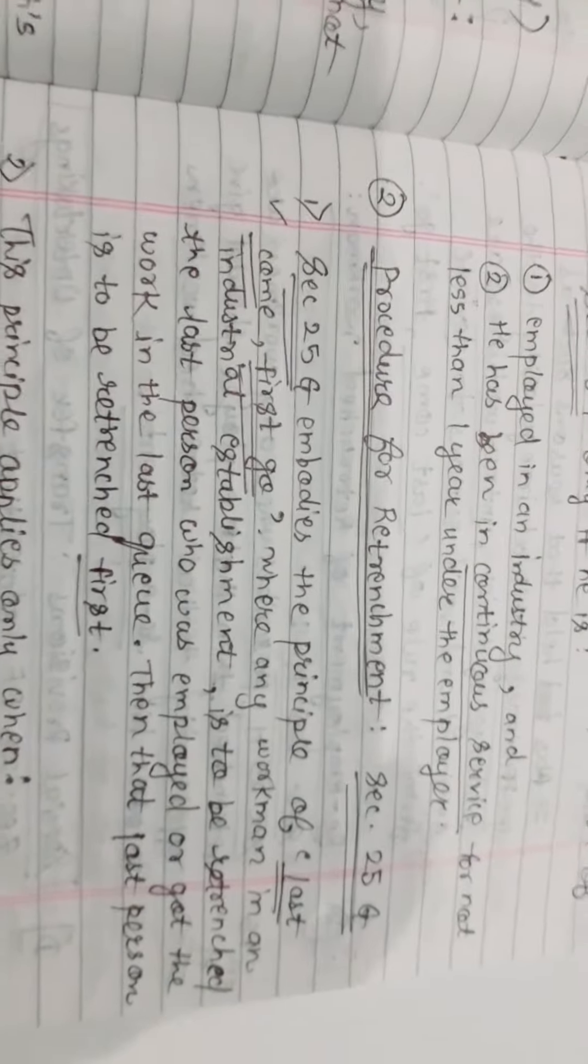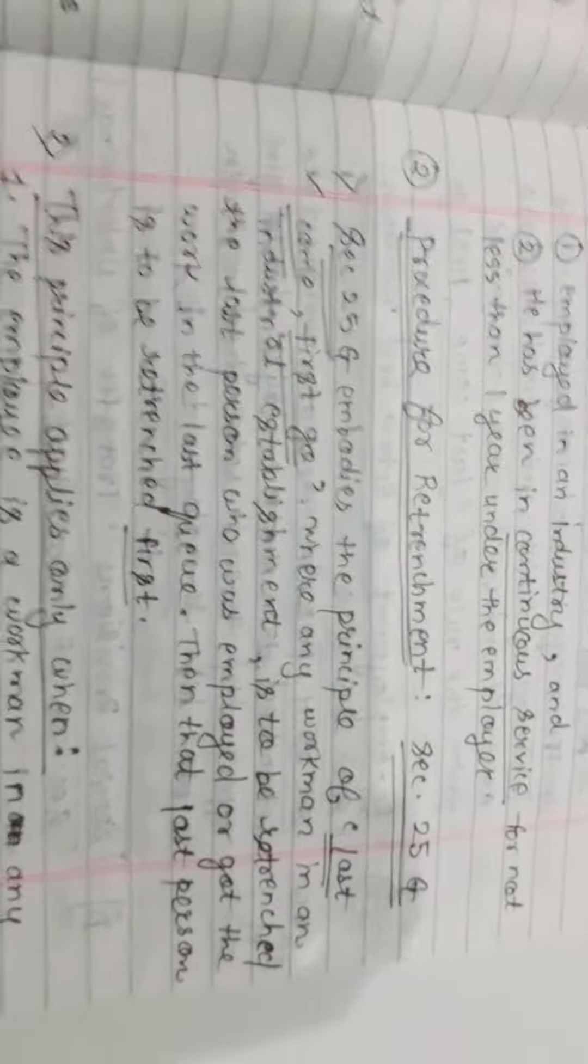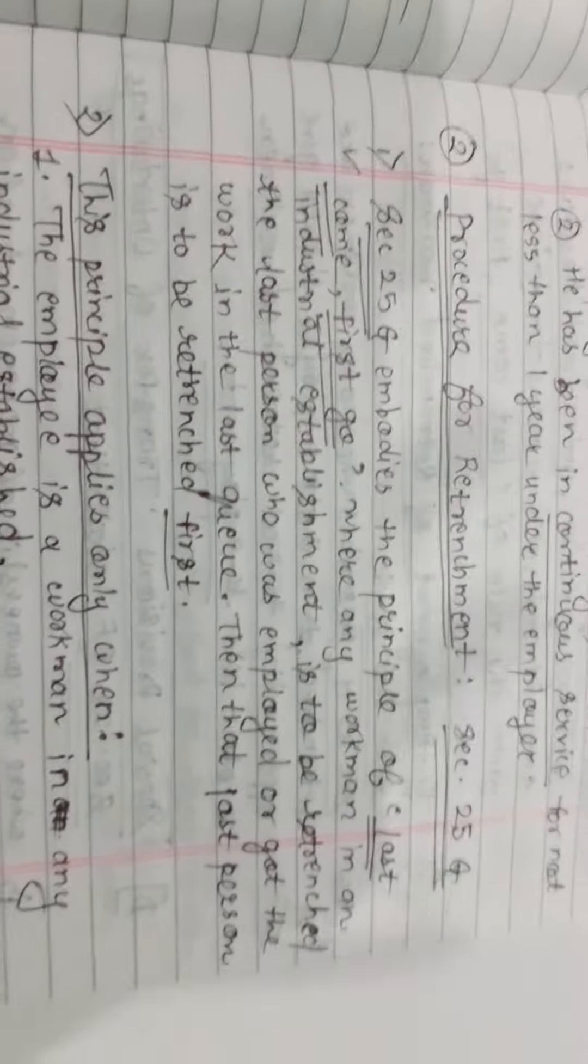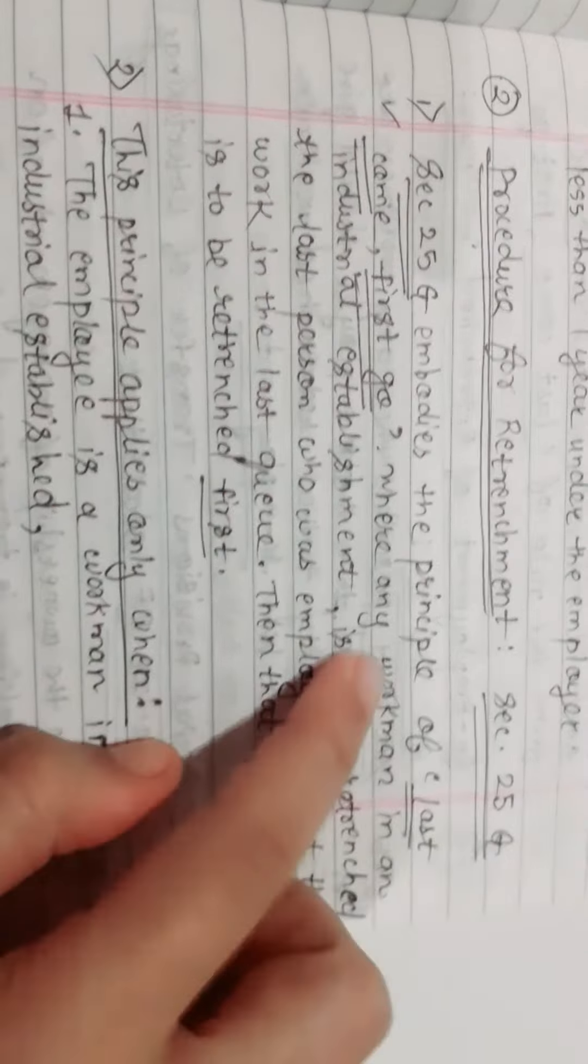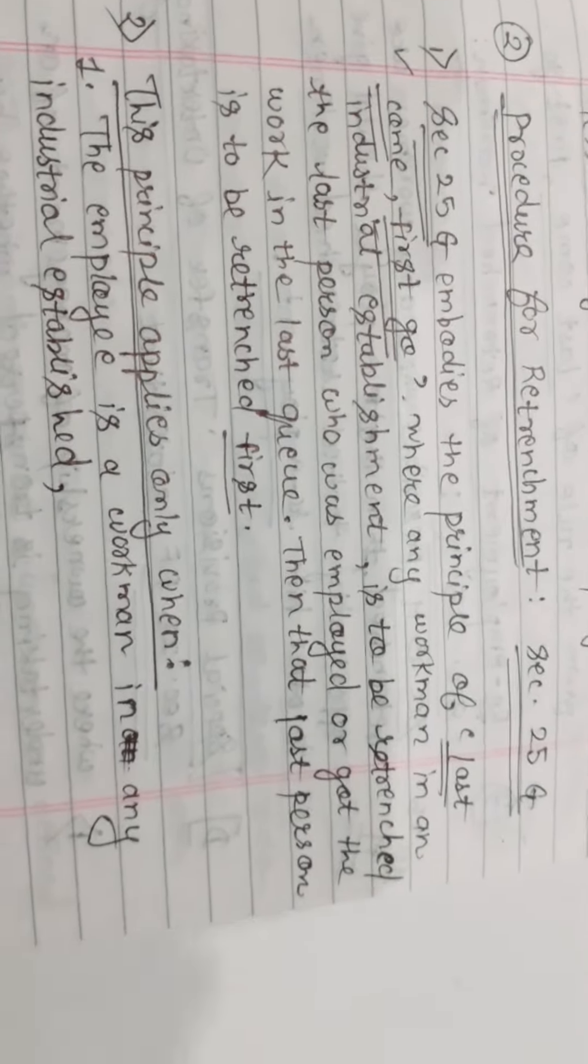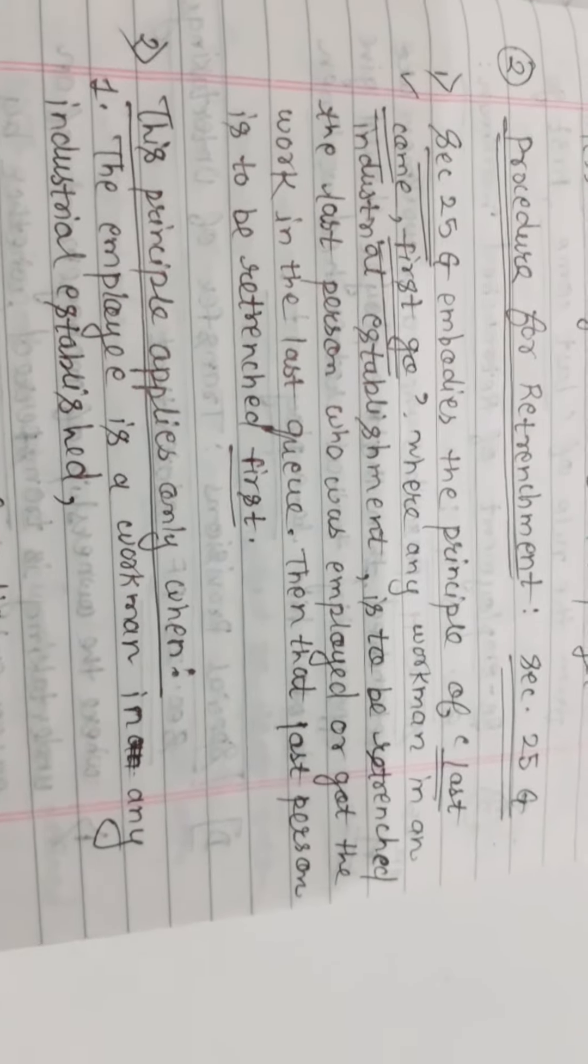The second provision is the procedure for retrenchment. It is in Section 25G. Section 25G embodies the principle of last come first go, where any workman in an industrial establishment is to be retrenched. The last person who was employed or got the work last, then that last person is to be retrenched first.